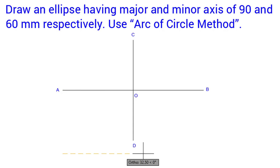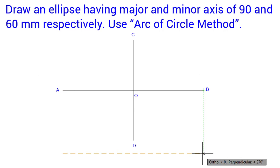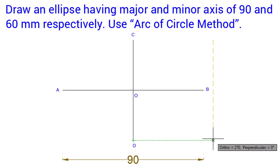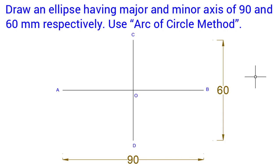The intersection of the major axis and minor axis is named point O. We will mention the dimension of the major axis as 90 mm and the dimension of the minor axis as 60 mm.